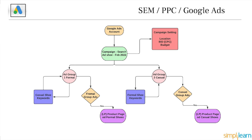After doing this segmentation, all formal keywords — party shoes, office shoes, formal shoes, formal black shoes — go into the formal ad group. That ad group triggers when any of those keywords are searched, and accordingly the formal shoes ad is shown with the relevant landing page. Vice versa, if somebody searches a casual term like casual shoes, sports shoes, jogging shoes, or running shoes, the casual ad group triggers, showing the casual shoes ad with the relevant landing page.